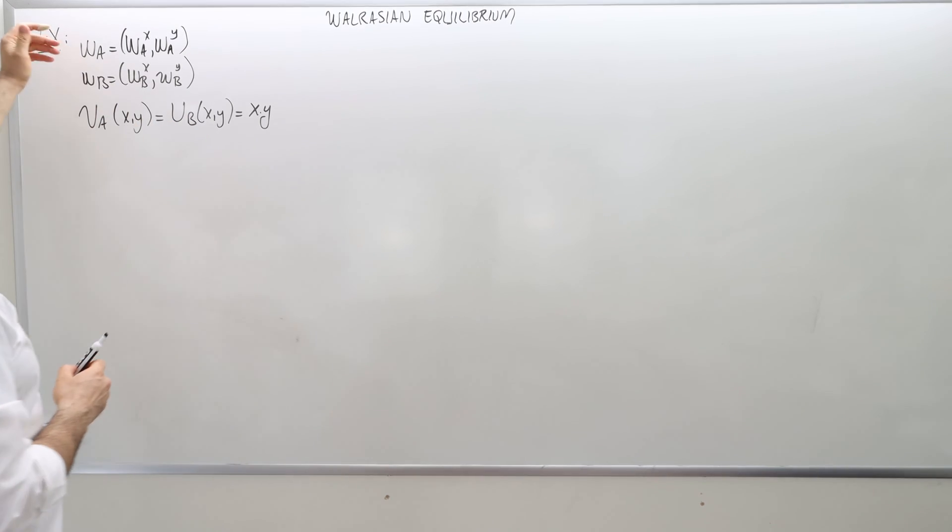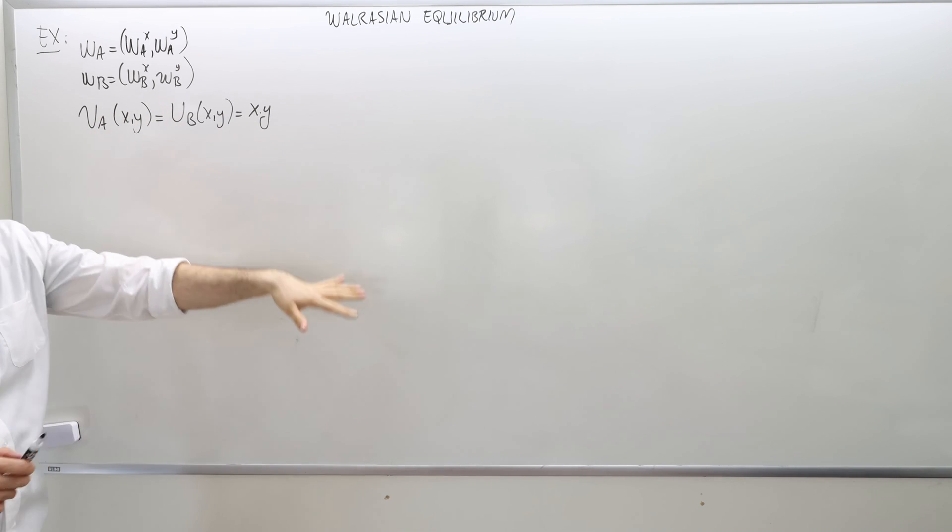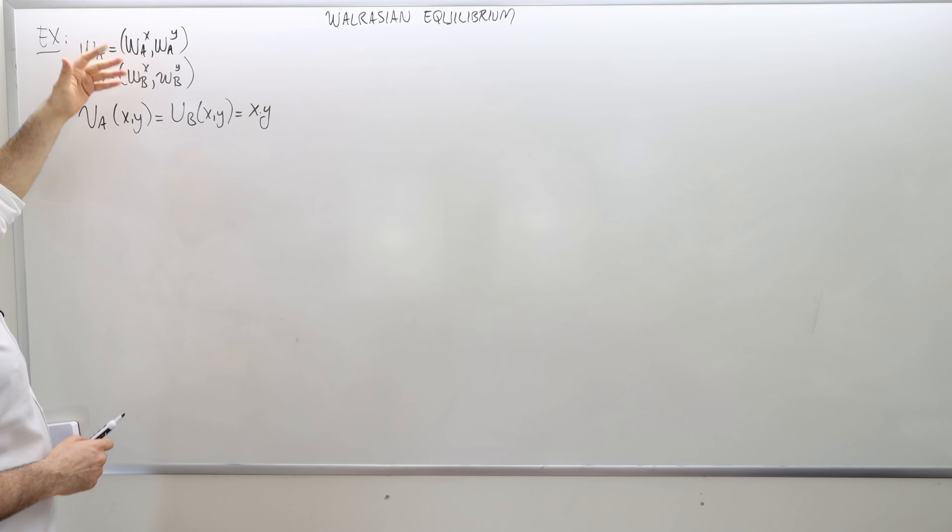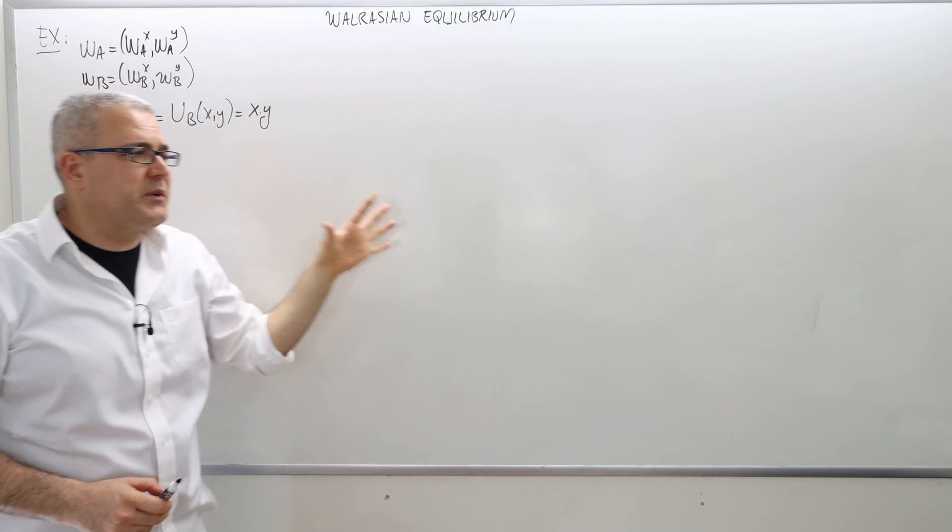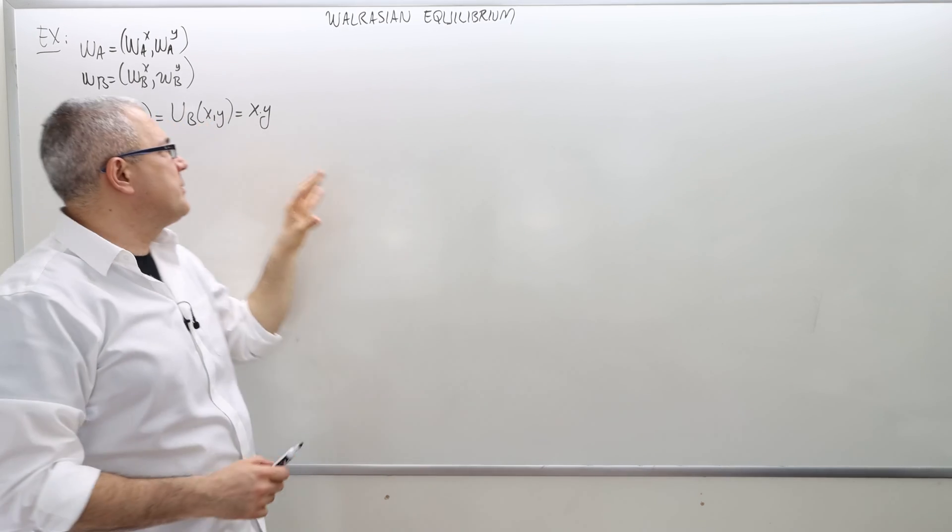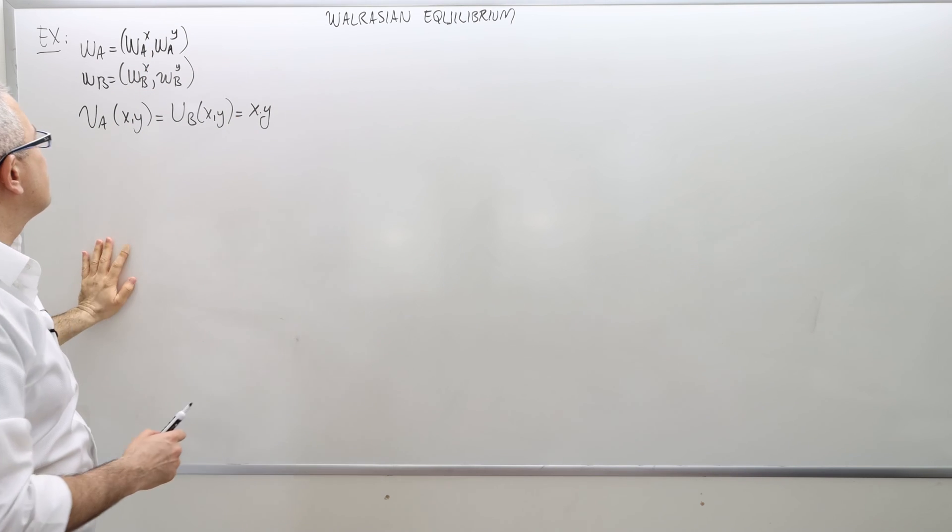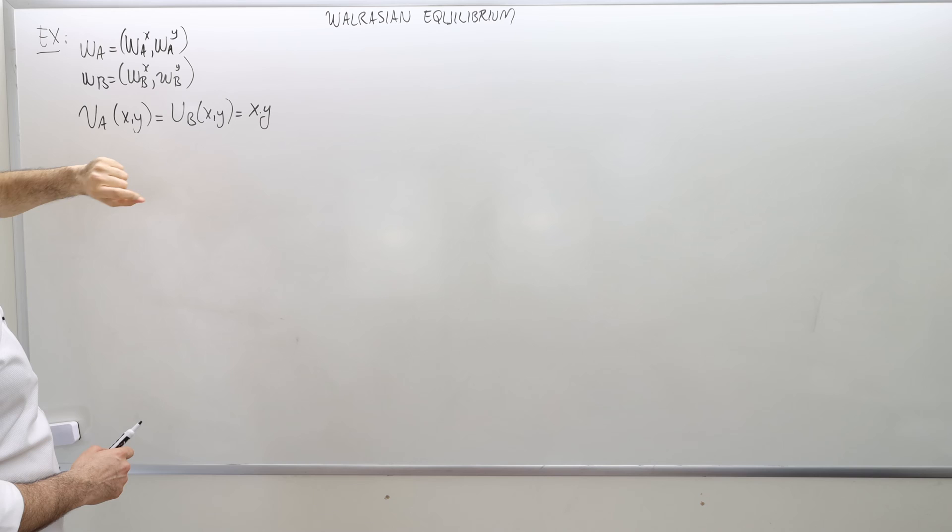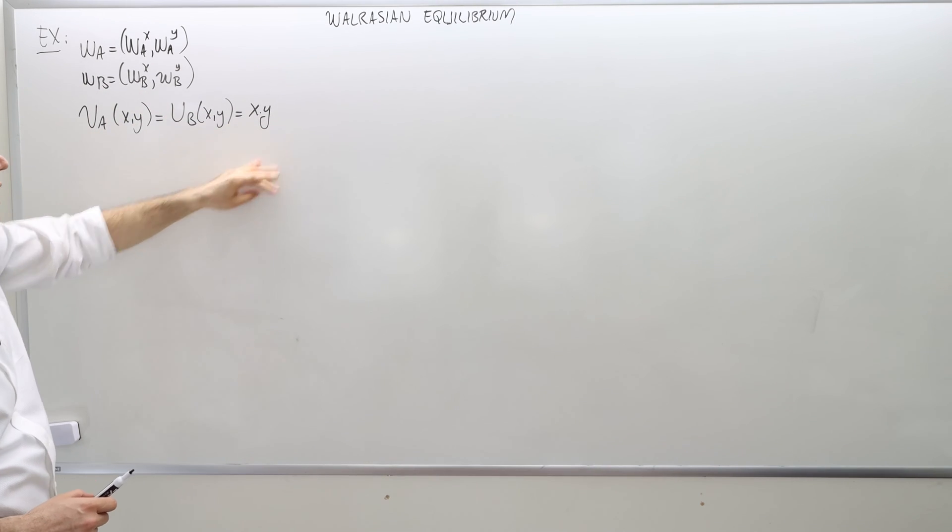Okay, so here's an example. The initial endowments - I am not giving any numerical values because the method will work for any utility functions, any endowments. But in order to get a specific result, we need to have specific utility functions, but we don't really need a specific endowment. So the initial endowments are as given, and the utilities are simple, the Cobb-Douglas x times y.